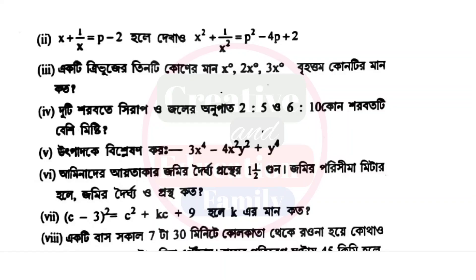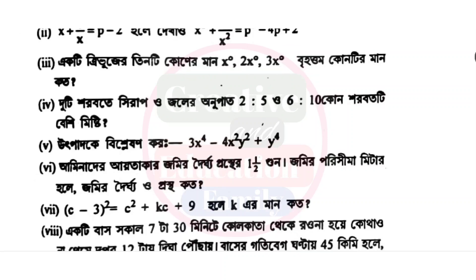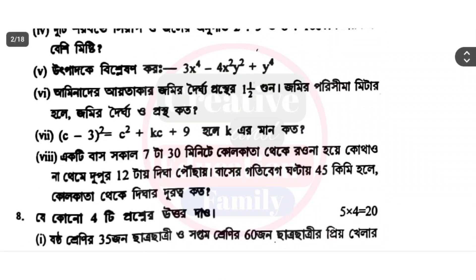Land problem: the first plot is double the second plot. If the boundary is given in meters, find the area. c minus 3 to the whole square: c square plus kc plus 9 — find k. One morning at 67:30, the distance in meters is given — find it.